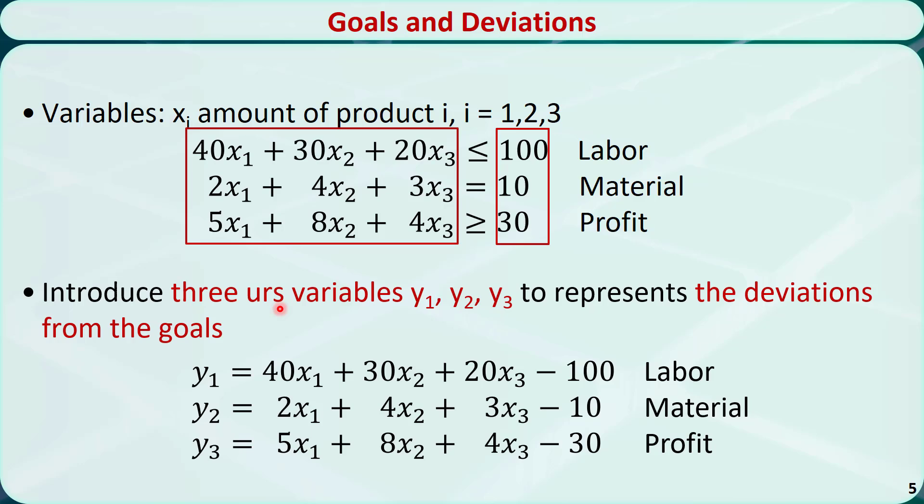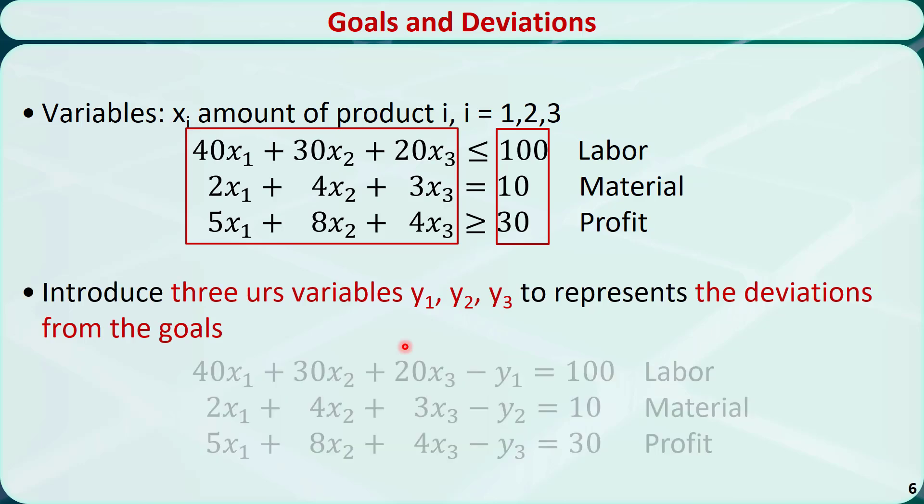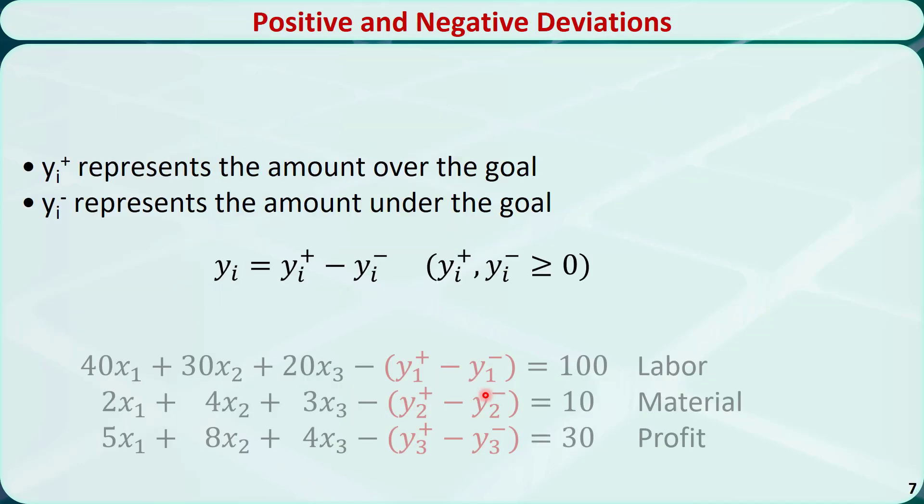Now let me rewrite these three equations by moving some items to the left-hand side and others to the right-hand side. This is the new form. We introduced in a previous video that if we have an unrestricted in sign variable, we need to define two new variables to represent the positive deviation and the negative deviation from the goal, and replace the unrestricted in sign variable with the positive deviation minus the negative deviation. Let's do that for these three equations.